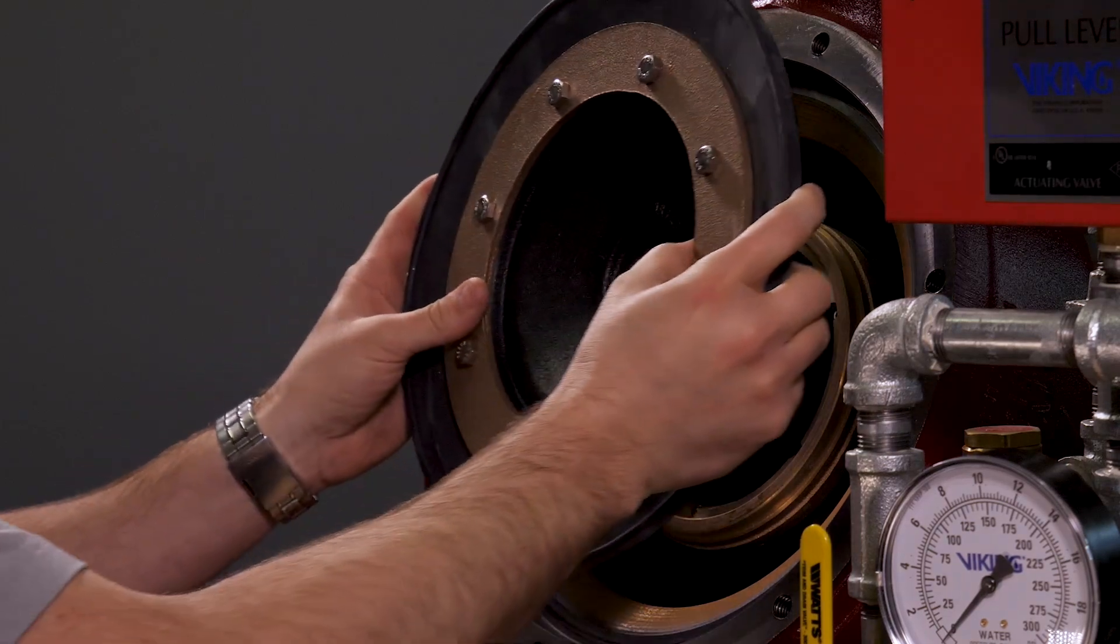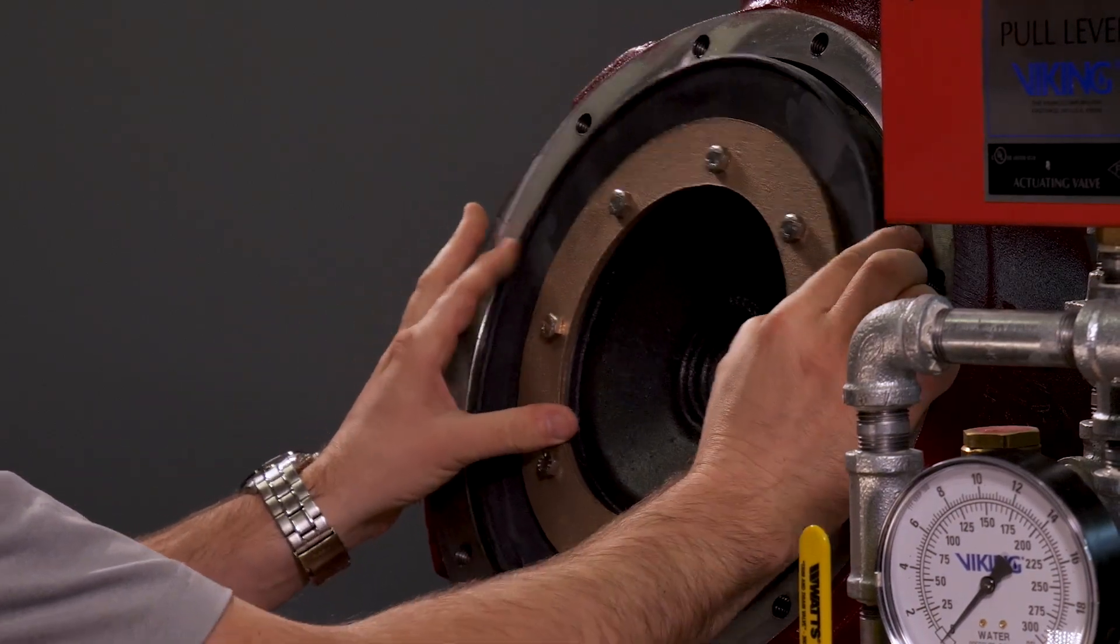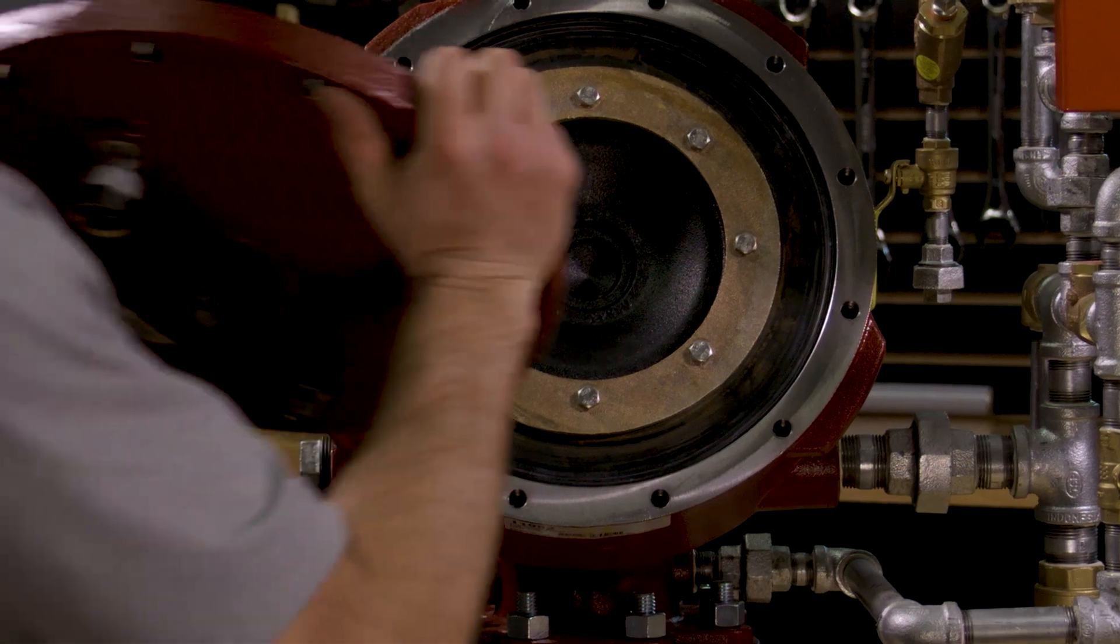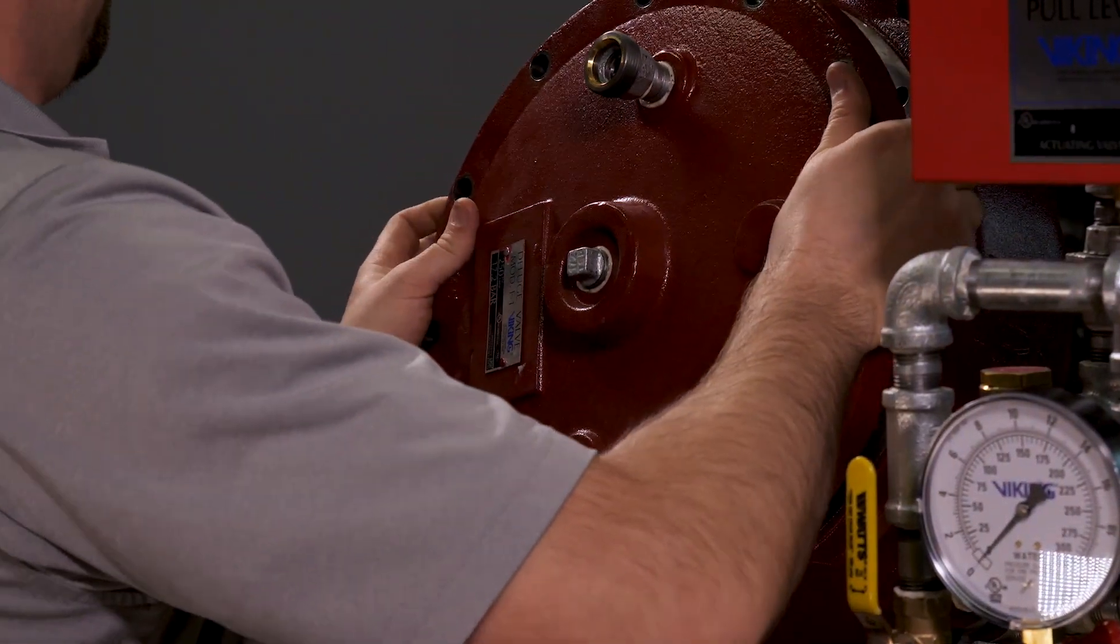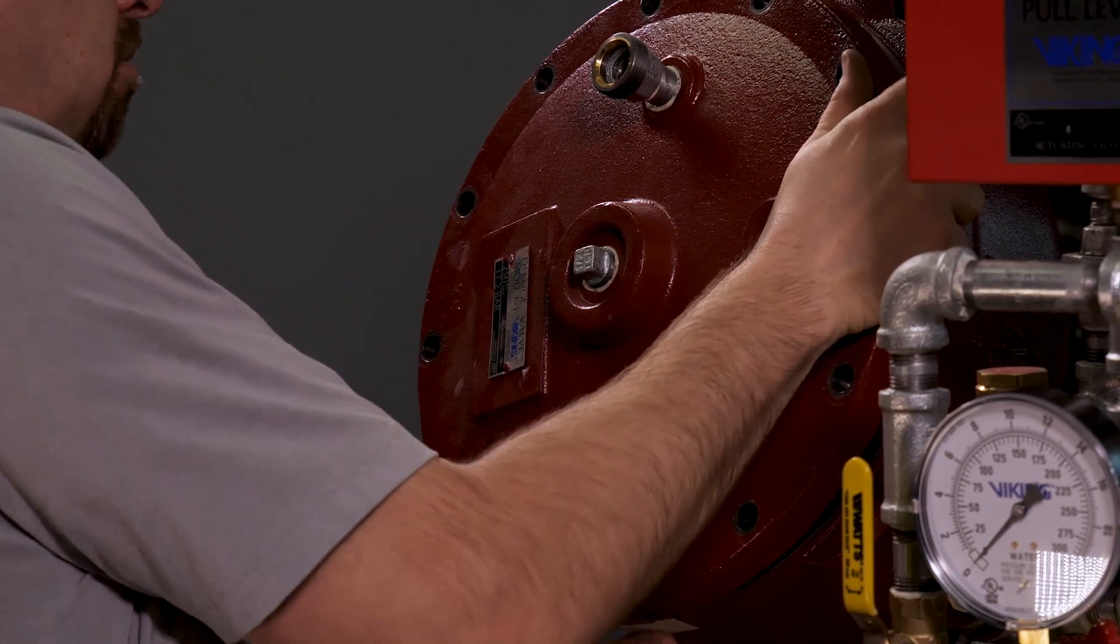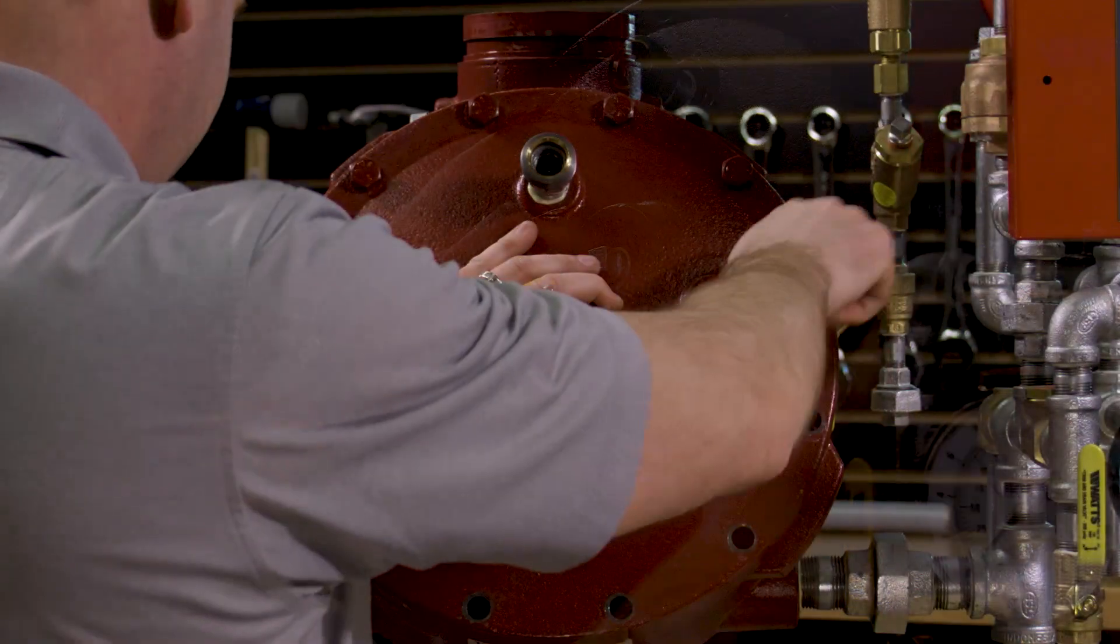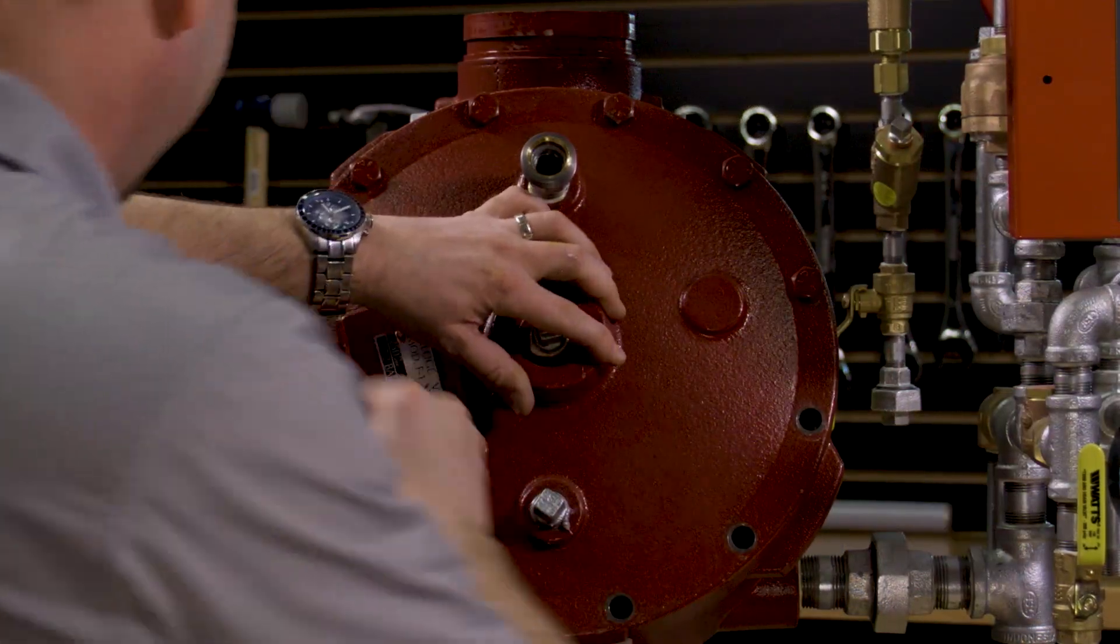The clapper assembly can now be placed back into the valve. Replace the cover of the valve. Hand thread in the cover screws, then tighten them down.